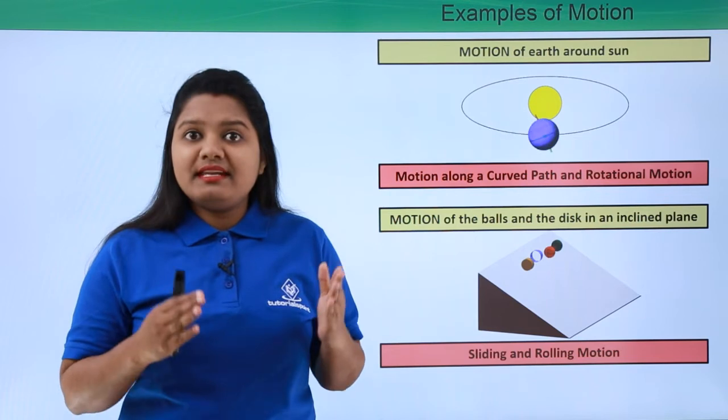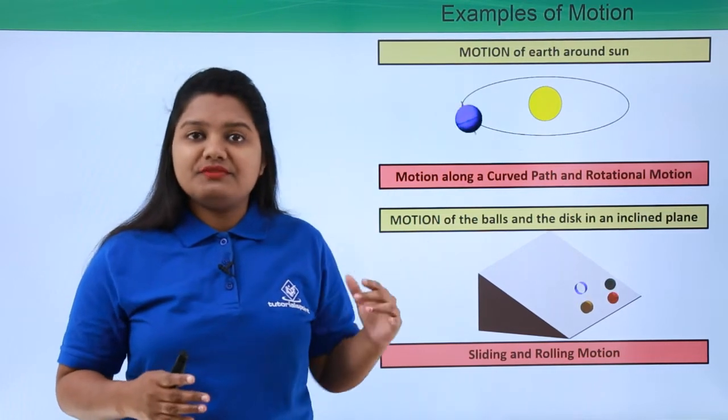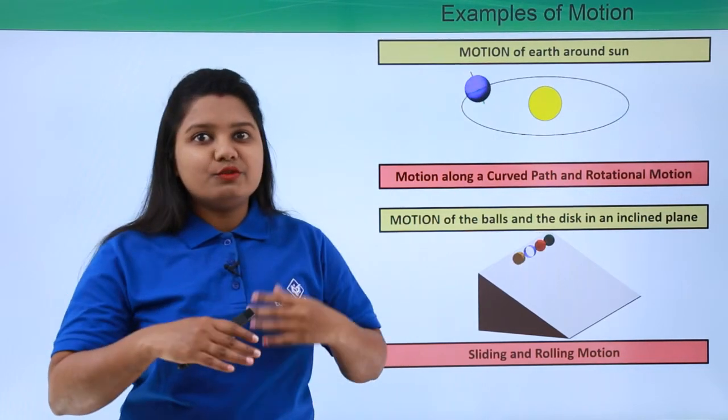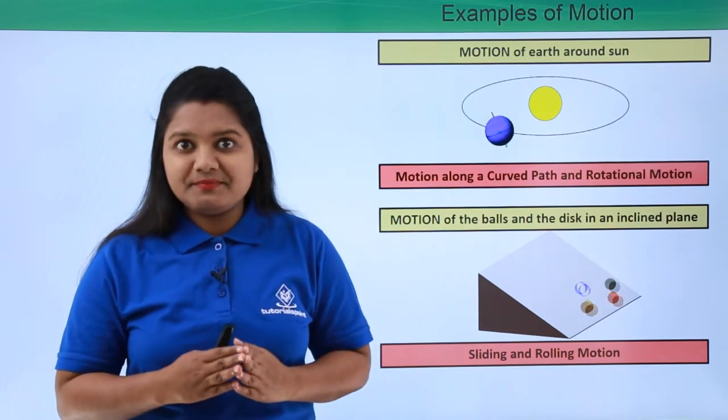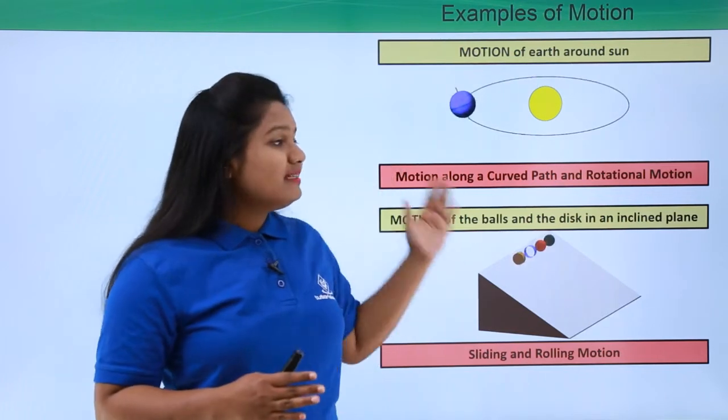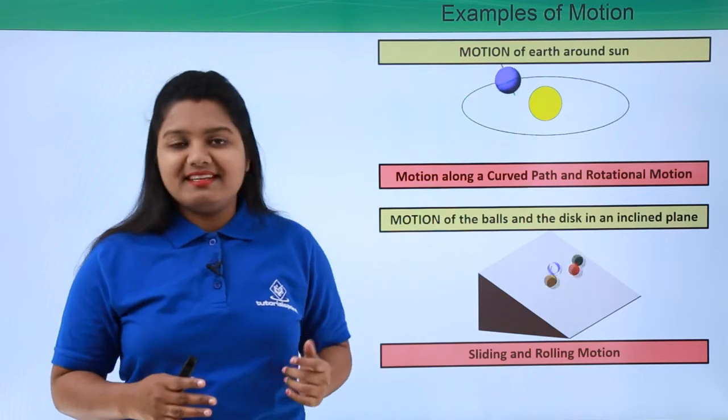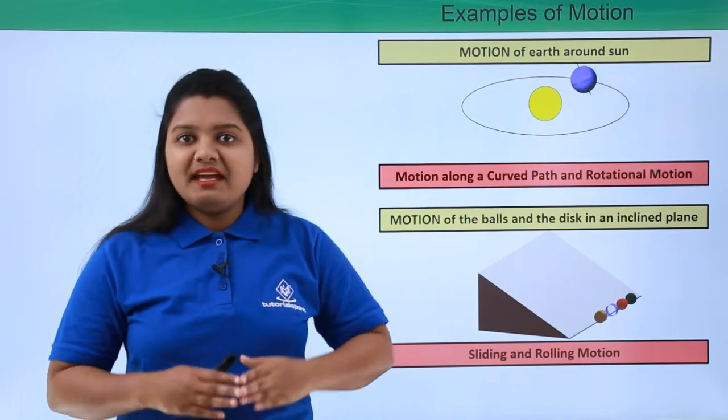So this is another example of combination of two kinds of motion. Now in everyday life we come across different bodies making so many other kinds of motion which are too complex, but we'll be looking at these kind of motions in this chapter in a bit detail.